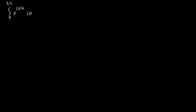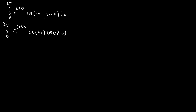This integral is really cool because it seems like it has some little trick that will make it easy to evaluate — and there is a trick, but it's not necessarily the easiest integral. The first thing we want to do anytime we see cosine of a sum is expand it using cosine of (a+b) properties. So we get the integral from 0 to 2π of e^(cos x) · cos(nx) · cos(sin x) plus e^(cos x) · sin(nx) · sin(sin x) dx.